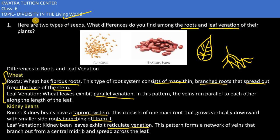In reticulate venation, the lines are not parallel. They originate from the central midrib line and can go in any direction, spreading across the leaf.